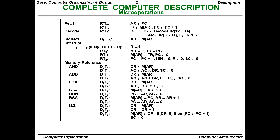To recap the fetch phase: at R-dash-T0, PC goes to AR; then PC is incremented by 1 and M[AR] goes to IR — these two steps constitute the fetch. Next is decode at R-dash-T2: bits 0 to 11 are for the address, bits 12 to 14 are for the opcode, and bit 15 is for I.